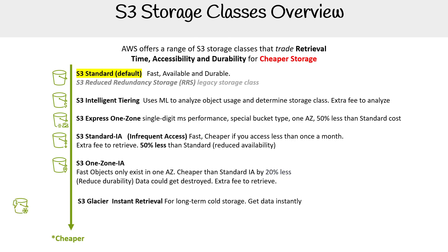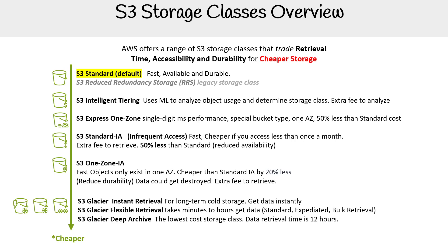Then we're getting to S3 Glacier. We have a whole section on it because it's more complicated and feels like its own service. AWS now has three storage classes for Glacier: Instant Retrieval, Flexible Retrieval, and Deep Archive. We often group Instant and Flexible together, so if a slide just says 'Glacier,' assume we mean both. Even within these tiers — like Flexible Retrieval and Deep Archive — you can break it down further into Standard, Expedited, and Bulk retrieval, which determines how fast you get your files back and how much you pay, since faster retrieval costs more.